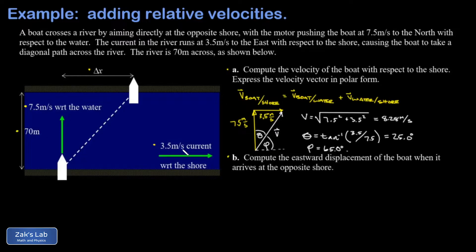In part b we want to find the eastward displacement of the boat when it arrives at the opposite shore. There's two different ways to do this. I think the quickest way to do it is to say, well, if the boat is always moving at 25 degrees with respect to the northward direction and we know that it moves 70 meters in the northward direction...